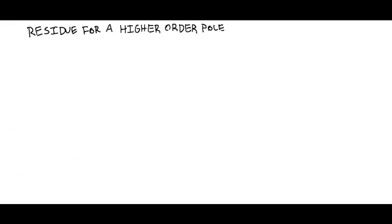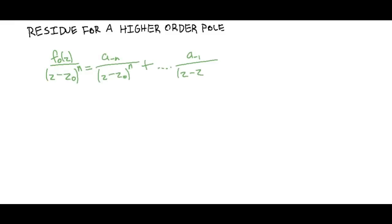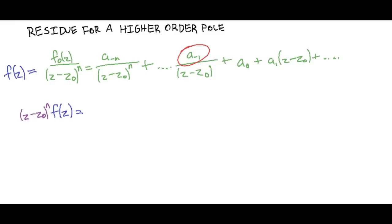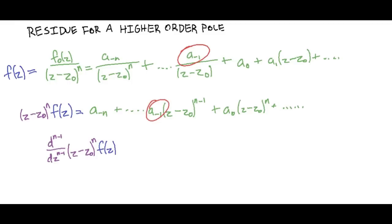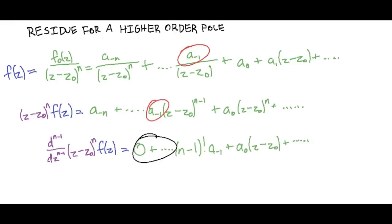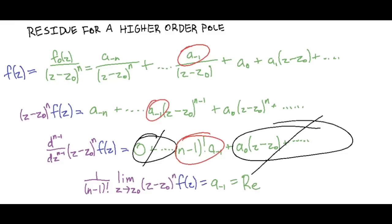For a higher-order pole, we start the same way, except instead of having a z to the negative 1 power, we have a z to some negative n power. The Laurent expansion for a function like that is very similar, but it has n terms raised to a negative power. To extract our a sub −1 term, we're going to get rid of all the z's in the denominator by multiplying the function by (z − z₀)^n. That will leave our a sub −n coefficient a constant, and all other powers of z go up by n. To get rid of the z's attached to our a sub −1 number, we're going to take n − 1 derivatives of our function. That will bring every number before it down to 0, leave a sub −1 a constant, and send the infinite terms in front of it to 0. Because of the derivatives, we now have (n − 1)! multiplied by our a sub −1. So we divide by (n − 1)! and take the limit as z goes to z₀. There's our residue.